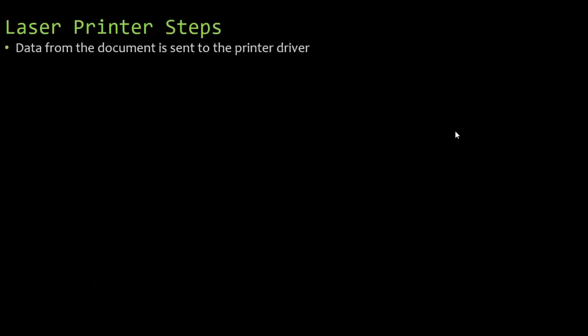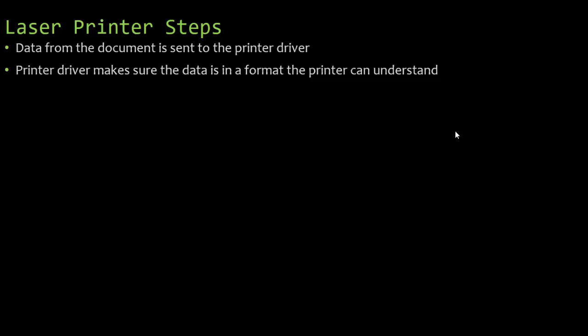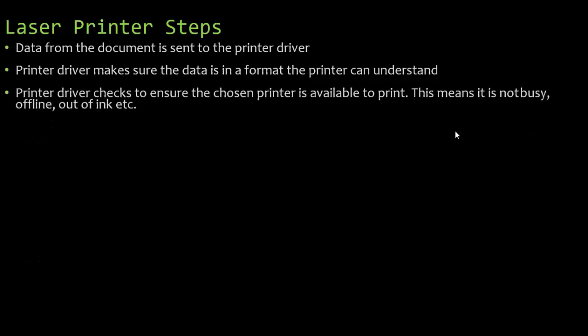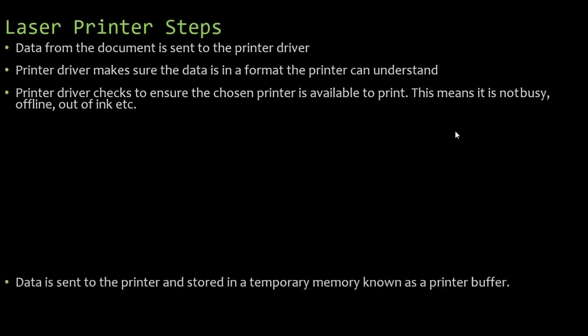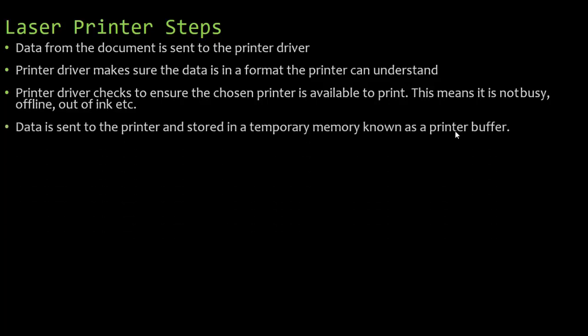Data from the document is sent to the printer driver, and the driver has a range of jobs. It needs to make sure the data you are sending to the printer is in a format the printer can understand. It checks to make sure the printer you chose is available — not busy, not offline, not out of ink, not out of paper. The data is then sent to the printer and stored in a temporary memory location called a printer buffer, which holds the data to be printed. When the printer is ready, it feeds from the printer buffer and prints it out.